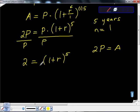So here we have 2 is equal to the quantity 1 plus r to the fifth power. Of course, to get rid of that fifth power, I'm going to take the fifth root. So I'm going to take the fifth root of this thing. At the same time, I'm going to take the fifth root of 2.